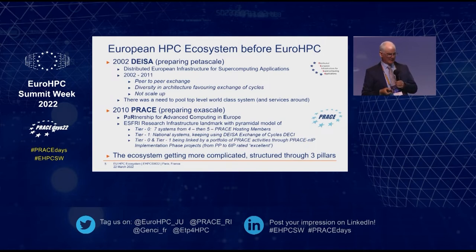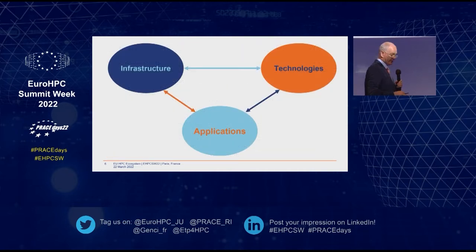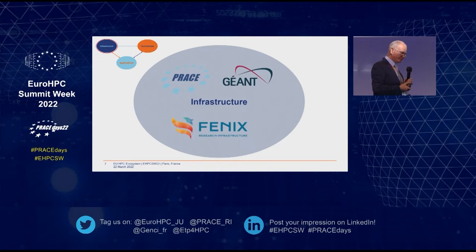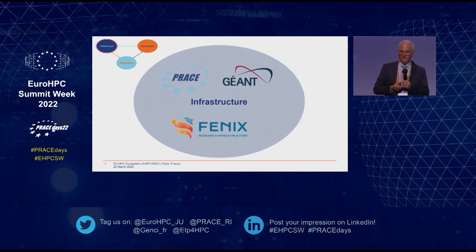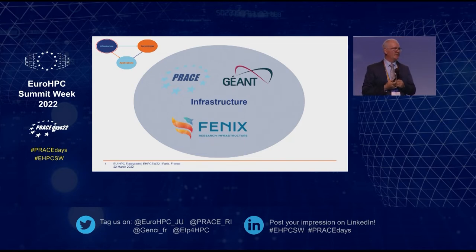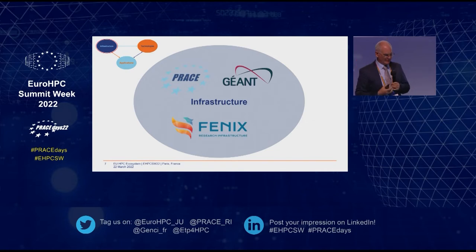The ecosystem was getting more and more complicated, and we structured it in three pillars: the technology pillar — where we have all which is related to HPC technology — the infrastructure pillar, and the applications pillar. In the infrastructure pillar, we group PRACE and GÉANT. GÉANT is not only a network provider, but also a provider of high-level services for identification and authorization. And FENIX, as a federated research infrastructure providing access to data and HPC infrastructure, which grew up from the Human Brain Project and is the basis for a federated research infrastructure.